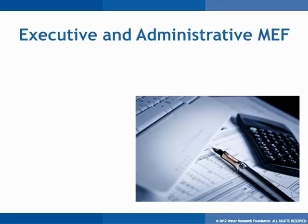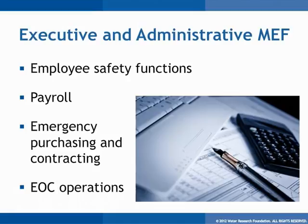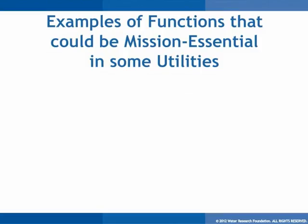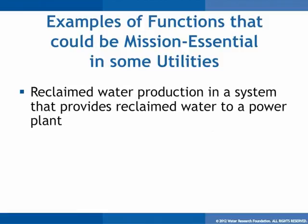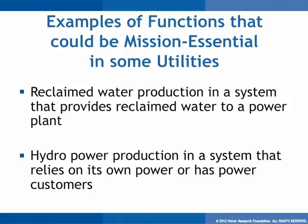The example MEFs provided thus far have all been operational in nature. There are also a number of executive and administrative functions that may be mission essential, such as sustaining employee safety functions, providing payroll checks to employees, purchasing critical or emergency materials and supplies, contracting for emergency repairs, and operating the Emergency Operations Center, or EOC. There are also some functions that are usually not mission essential that could be mission essential in some systems. For instance, reclaimed water production will generally not be an MEF; however, in a system where reclaimed water is provided to a critical customer such as a power plant for cooling water or a hospital for chiller water, it could be an MEF. Similarly, in a system that produces electrical power needed for its own operations or for critical customers, that function would be mission essential.